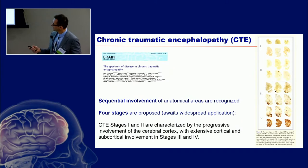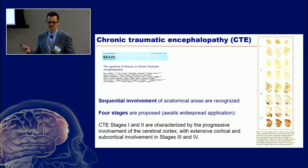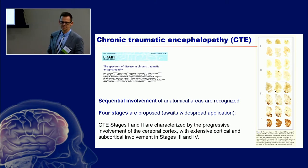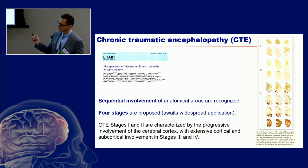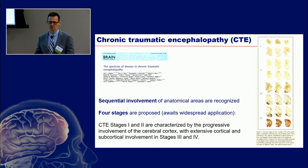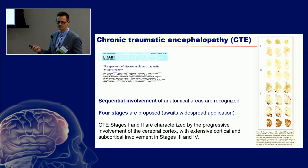Anne McKee and her group also suggest that there might be a sequential involvement of anatomical regions. Although this awaits widespread application in practice, it suggests there might be four stages. The first stage seems to start in cortical areas — like lobar areas, parietal, temporal, or frontal lobe — and in particular in the depths of the sulci.